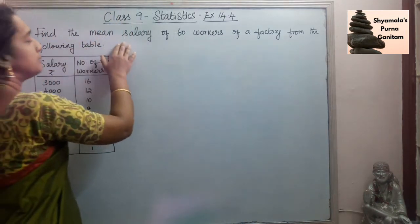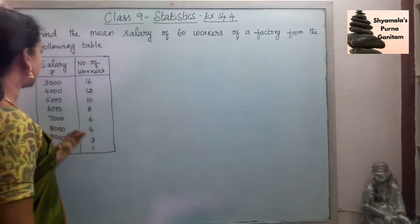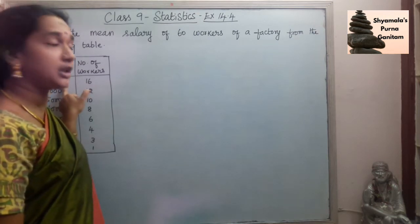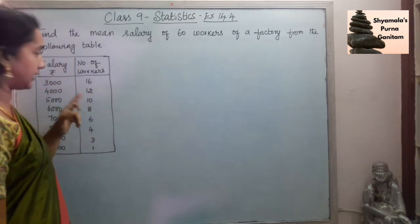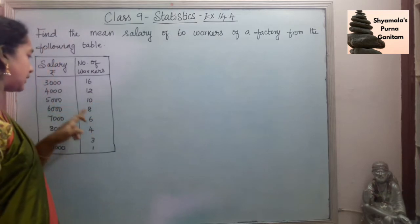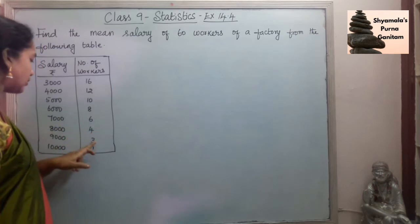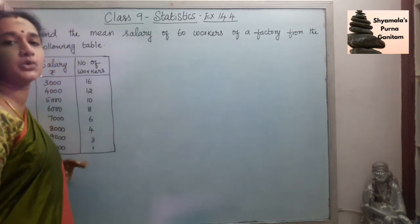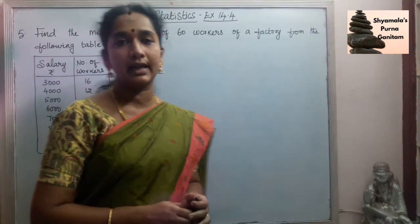So the last sum: Find the mean salary of 60 workers of a factory from the following data. 16 workers are getting 3000 rupees salary, 12 workers are getting 4000 rupees, 10 workers are getting 5000, 8 are getting 6000, 6 are getting 7000, 4 are getting 8000, 3 are getting 9000, and 1 person is getting 10,000 rupees. So this is the given data and we are asked to find the mean.